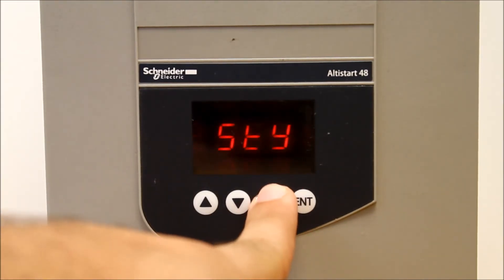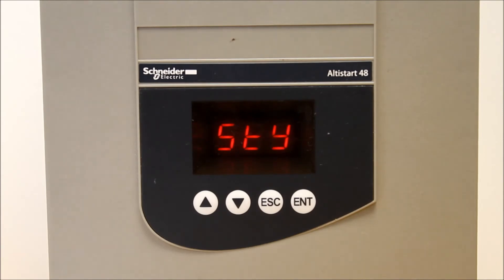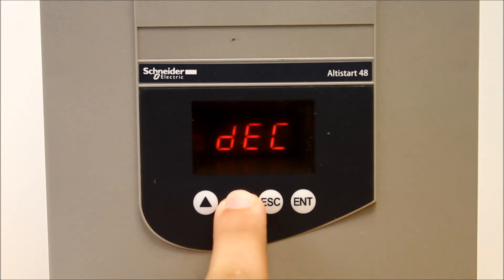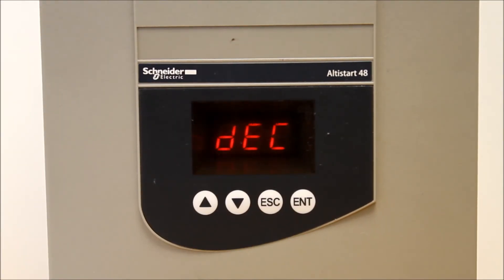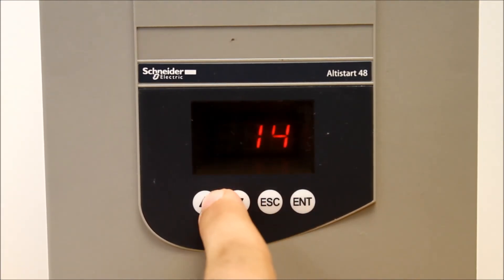Now that you have set your type of stop to ramp stop, you can adjust your time frame for the stop. Once you escape back to STY, you will finally see DEC. This was not available before since you had a freewheel stop. But since we changed the type of stop to ramp, the DEC is available. Now we can press Enter and set the time in terms of seconds.